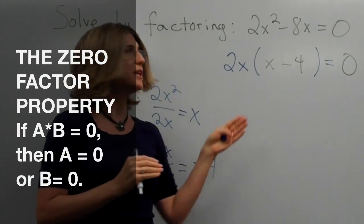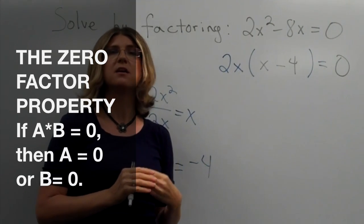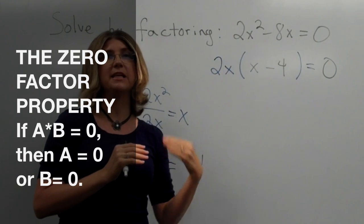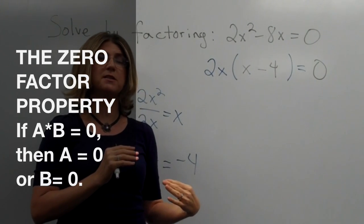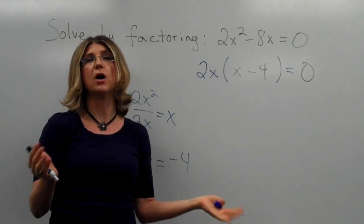Now, we can set each of these two factors equal to 0, because if two quantities multiply to give 0, then either the first one must be 0, or the second one must be 0, or I guess they could both be 0.